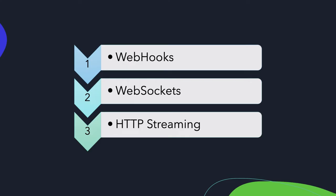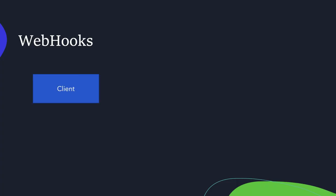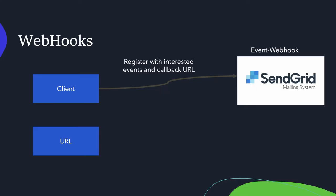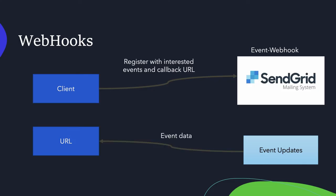Let's have a closer look at each one. In webhooks, we've got our client and our webhook API provider. The client usually needs to do a one-time registration, defining two key pieces of information: the events the client is interested in, and the callback URL the API provider sends updates to. That URL is basically an endpoint that the client exposes for the API provider to send updates to. Simply put, the client tells the API provider: these are the events I'm interested in, and this is where you should send me the information. Whenever there are event updates the client is interested in, the API provider sends a request — usually a POST request — to that URL along with the relevant information. And that's it. That's what webhooks do.